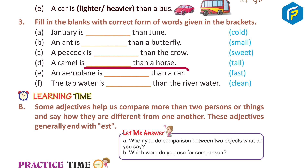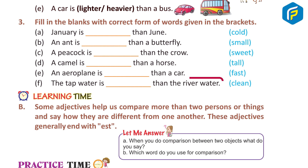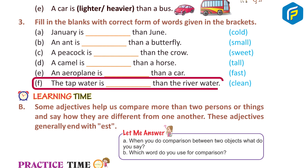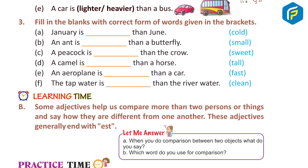E. An aeroplane is faster than a car. F. The tap water is cleaner than the river water.